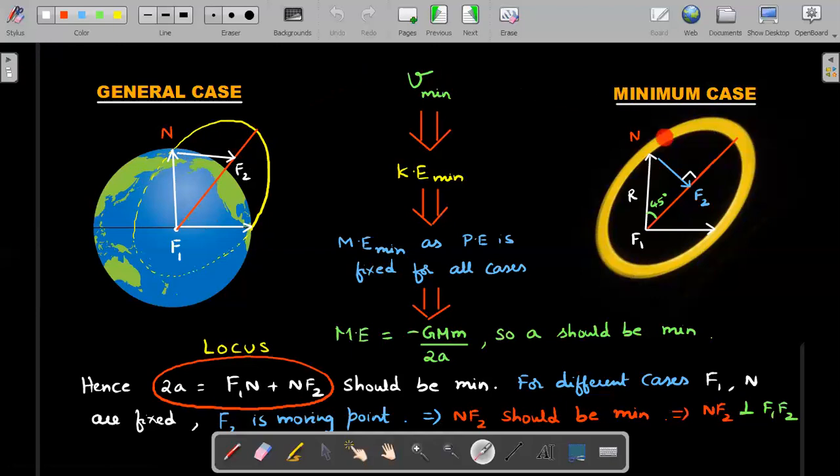Just follow my lead to the minimum case. The condition is where F2 is drawn in such a way that NF2 is perpendicular to F1F2. Okay, so that's what I wrote here. For different cases, F1 and N are fixed, right? These two positions you can't change. So F2 is a moving point. And for NF2 to be minimum, NF2 should be perpendicular to F1F2. So this solves our problem straight flat out without any calculus involved.